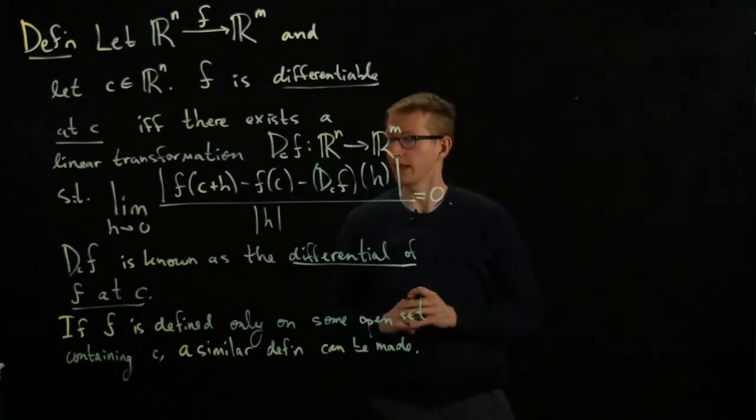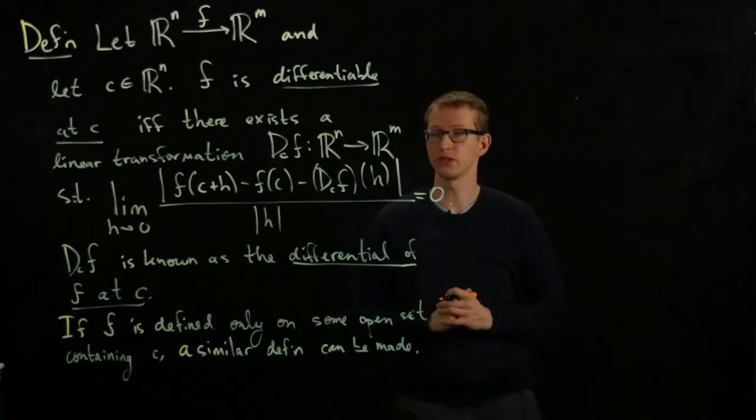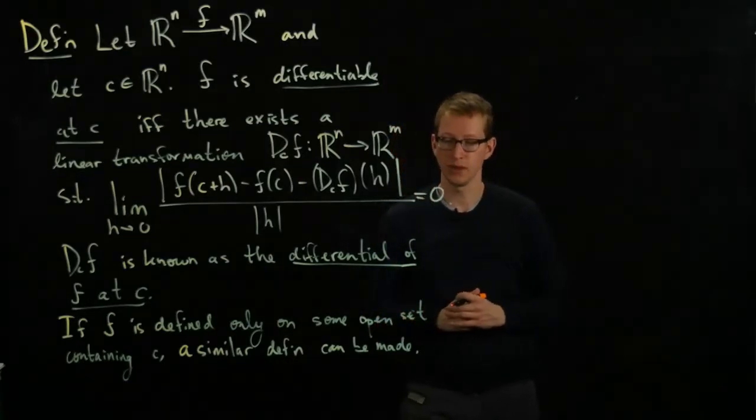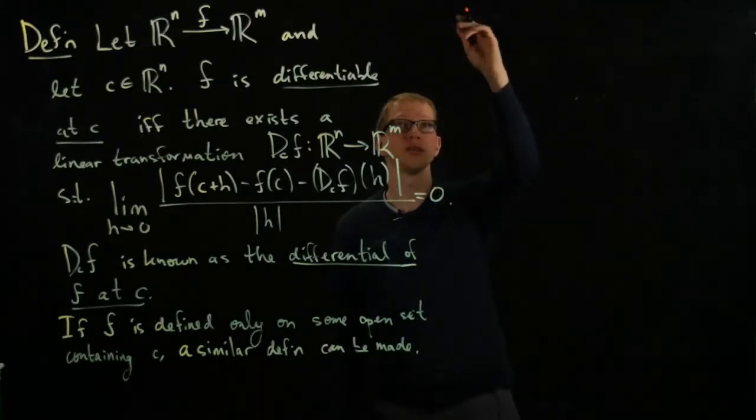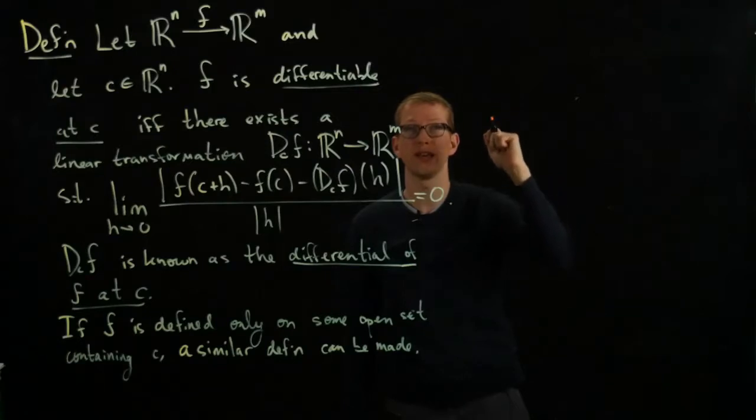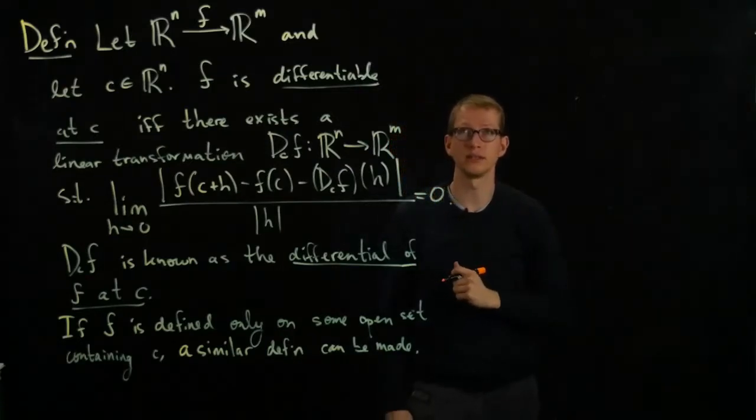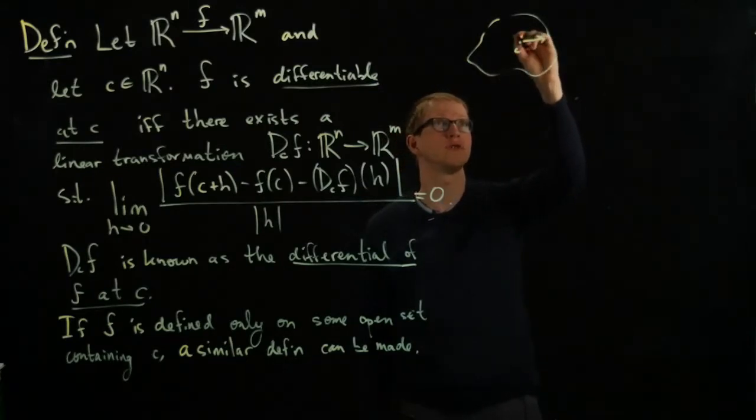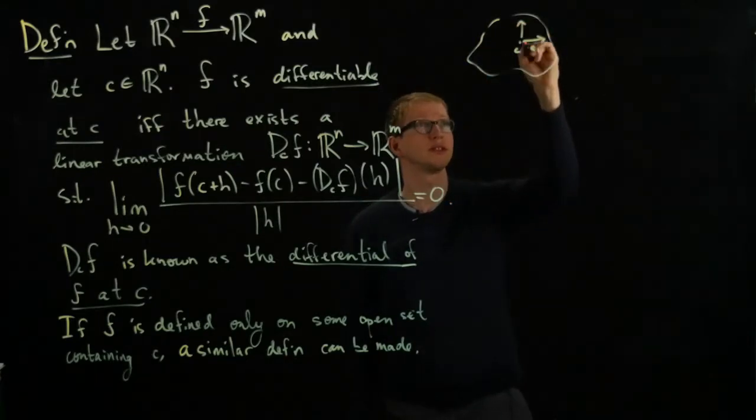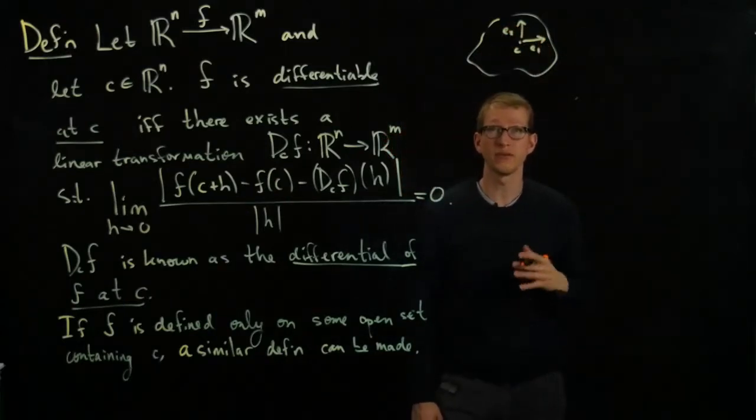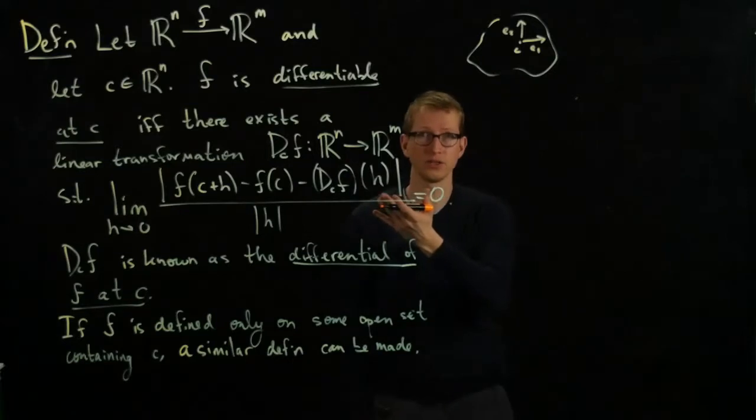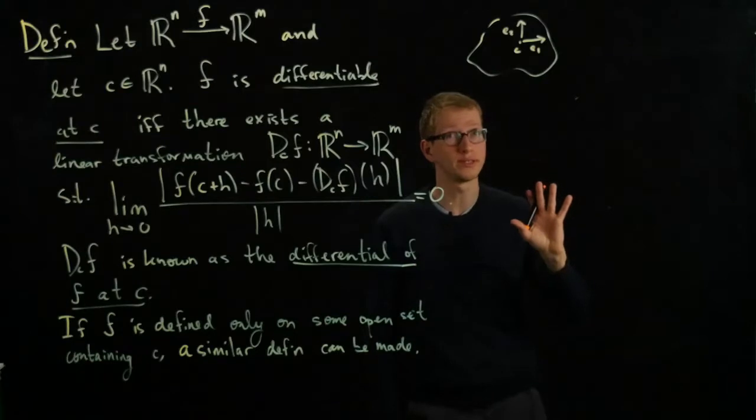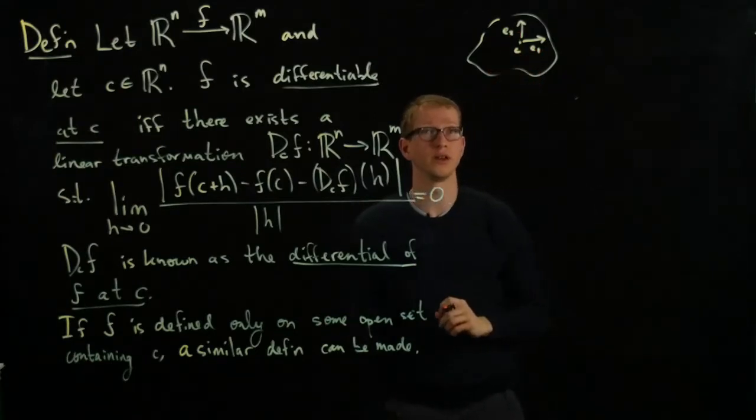And if such a differential operator exists—that's another terminology we could use sometimes—what we can do is evaluate this linear transformation at very specific vectors at C. Let me draw a hypothetical domain. Here's the point C, and let me draw two vectors: this is the vector E1, this is the vector E2. If we have a differential at the point C, then we can evaluate it at any vector in R^n. In particular, we can evaluate it at the unit vectors in R^n.